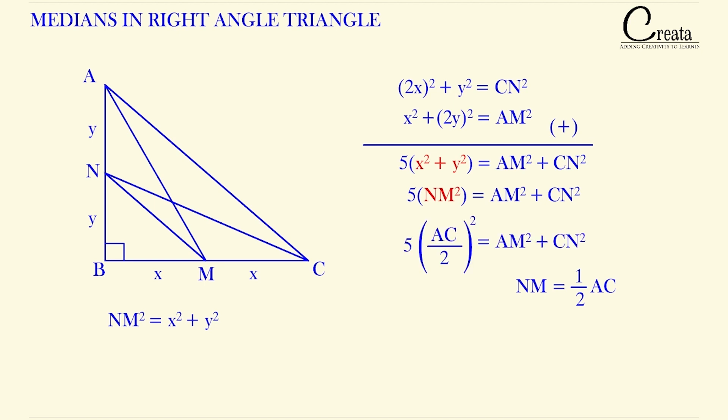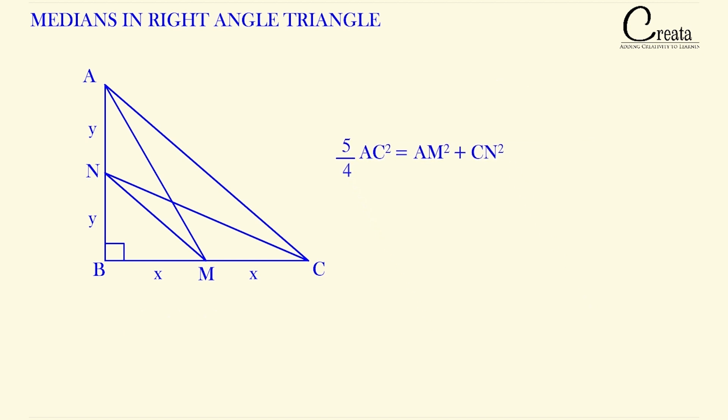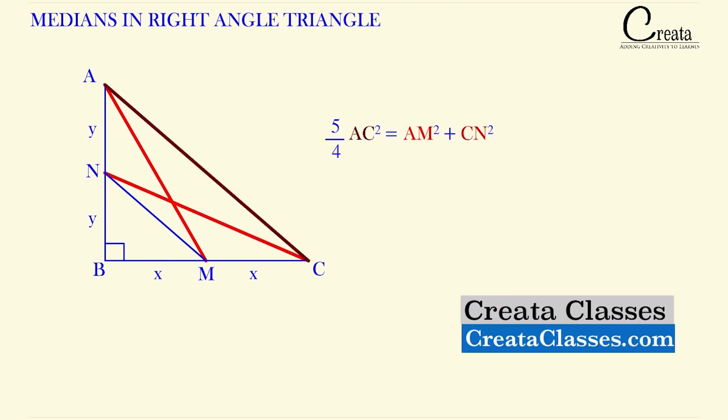Let's do so. We got 5 times AC by 2 whole square is equal to AM square plus CN square. On solving, we got 5 by 4 AC square is equal to AM square plus CN square. This is the relation. Here AM and NC are the medians for this triangle and AC is the hypotenuse for this triangle. As per this relation, 5 by 4 times AC, that is hypotenuse square, is equal to sum of square of the two medians. This is one of the important relations that is generally asked in competitive exams.